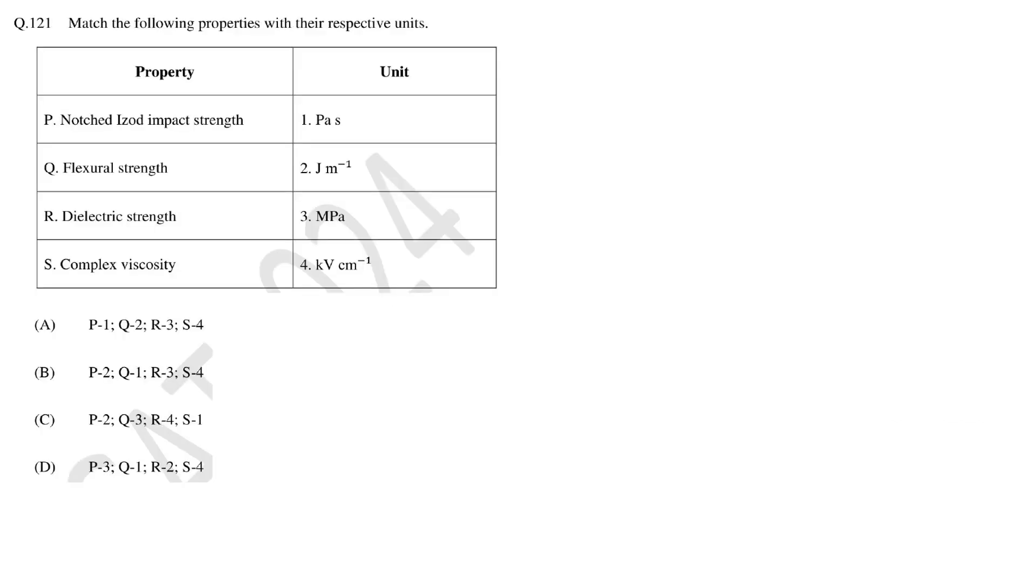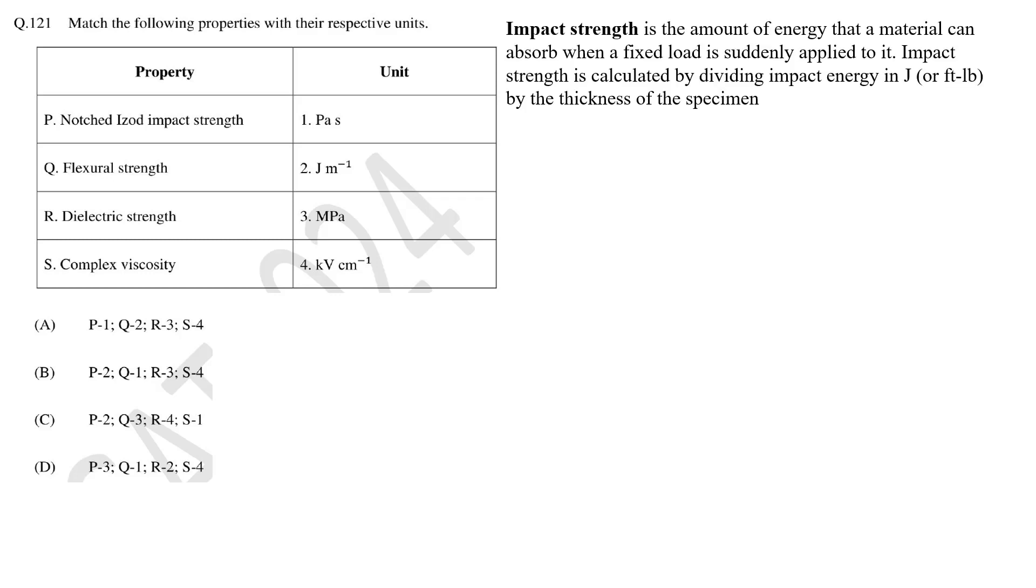This question is from Polymer Properties. If you know the basics you can easily answer this question. Izod impact strength test determines the amount of energy absorbed by a material during fracture. This absorbed energy tells about material's toughness which is an indication of material's brittle or ductile nature. In this test a v-shaped notched sample is mounted on a machine then a weight pendulum hammer strikes the test specimen. Impact strength is calculated by dividing impact energy by the thickness of the sample.